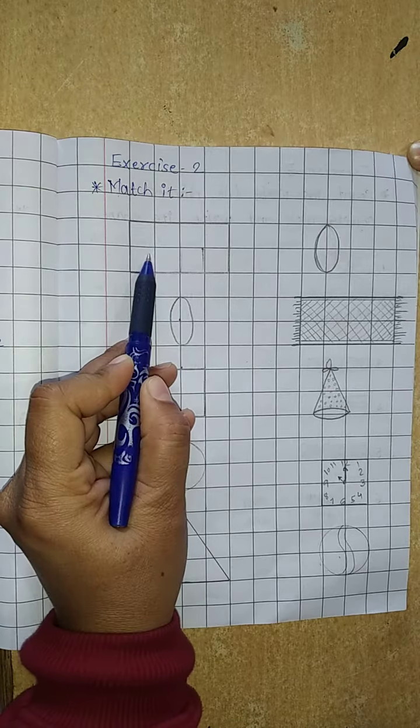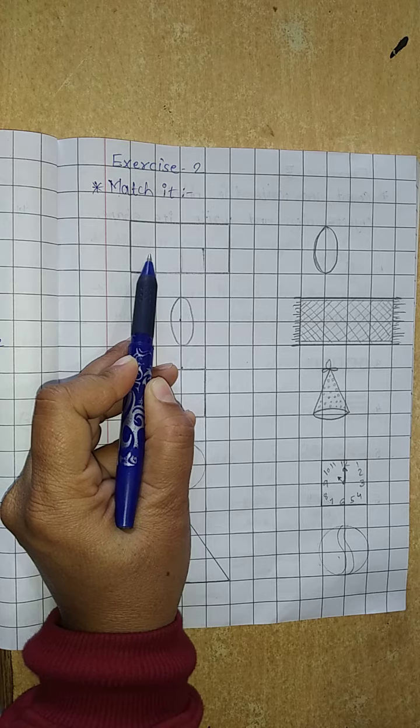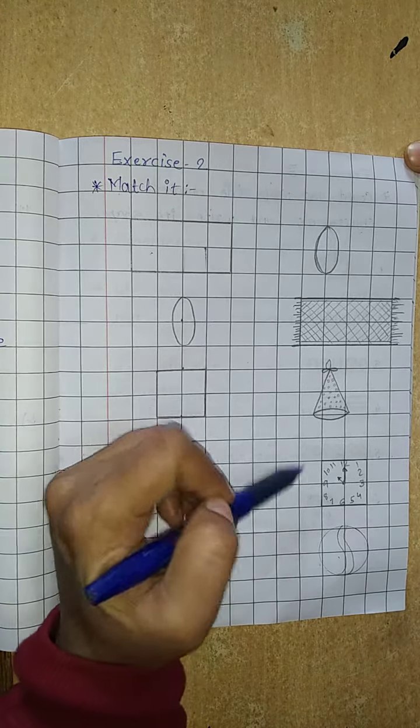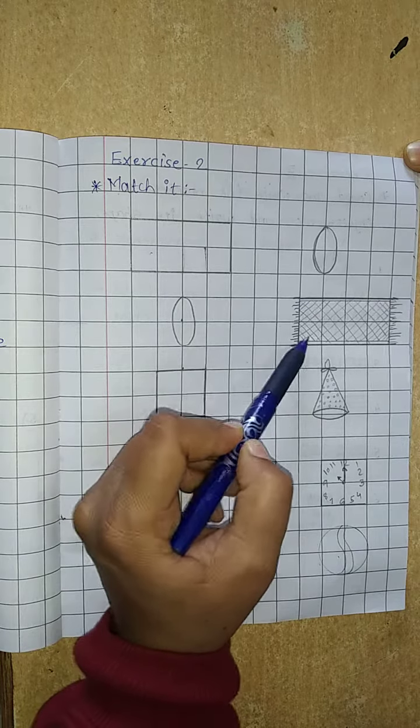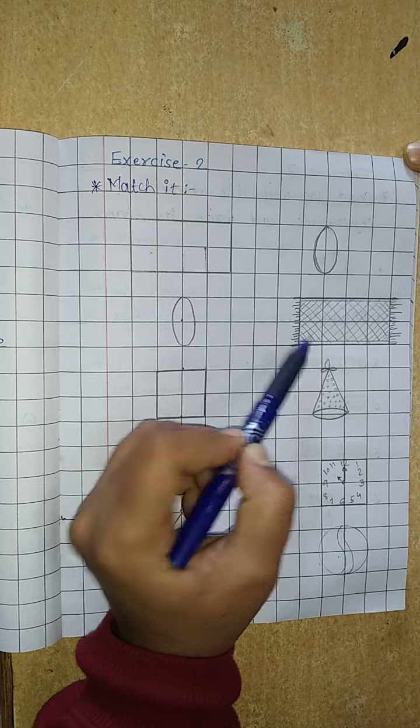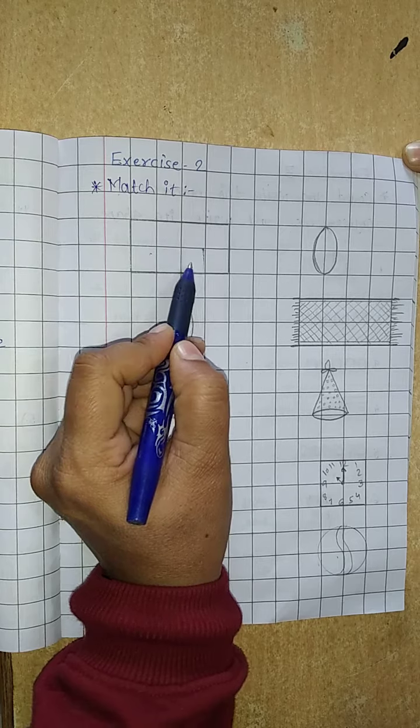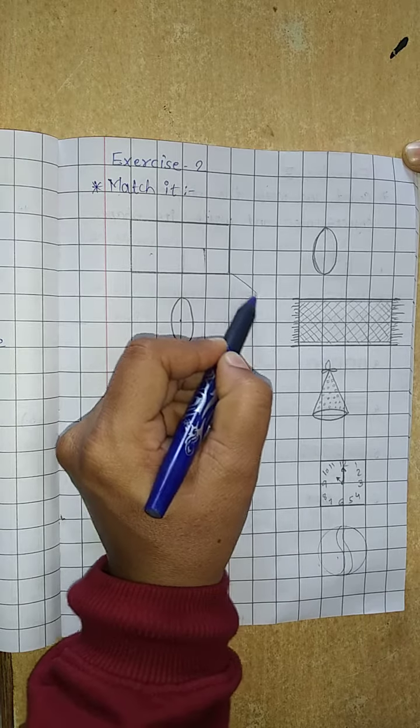Now here is which shape? Here is a shape of rectangle. So now look here in this part, which shape is rectangle? Here is oval, here is rectangle shape. So we have to match rectangle with the mat.